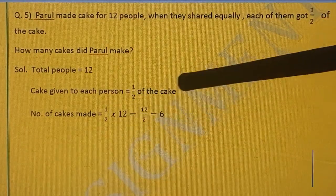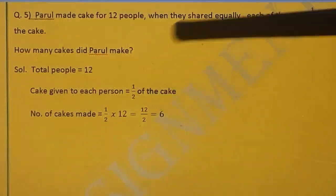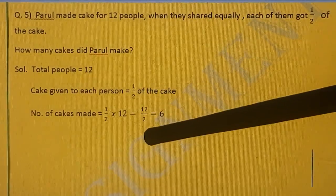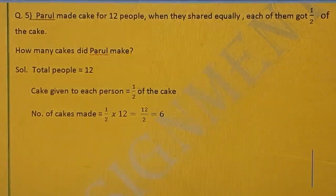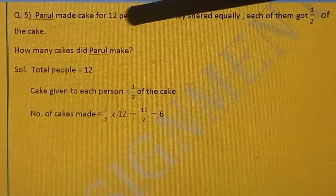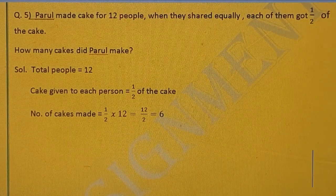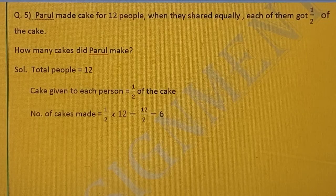So 1 upon 2, half half cakes each one got. So 1 upon 2 multiply by 12. 2 ones are 2, 2 sixes are 12. Or we can say 12 upon 2, 12 divided by 2 will give you the answer 6. Total cake made by Parul are 6. And these are distributed to 12 people. And each got half of the cake. Right?